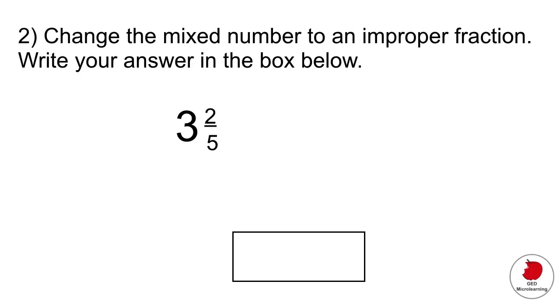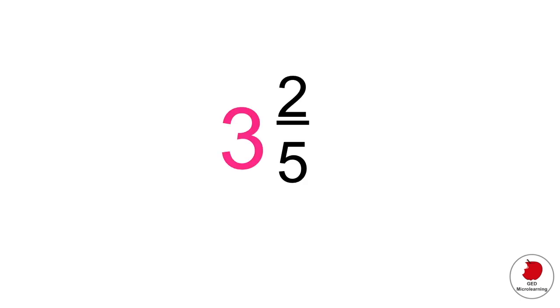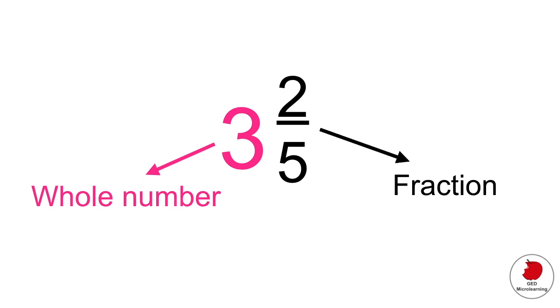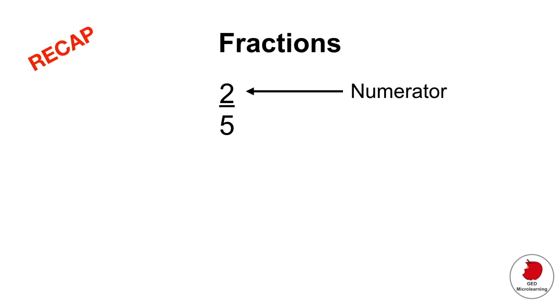The next question is a fill in the blank question. It says change the mixed number to an improper fraction. Write your answer in the box below. First, let's remind ourselves about fractions and mixed numbers. When you have a mixed number like this one, it contains two elements: one is a whole number and the other part is a fraction. Fractions have a numerator on top and the denominator on the bottom.